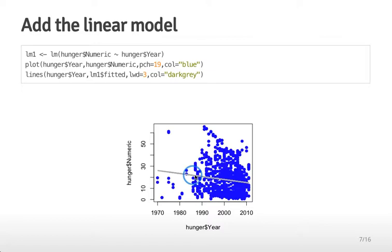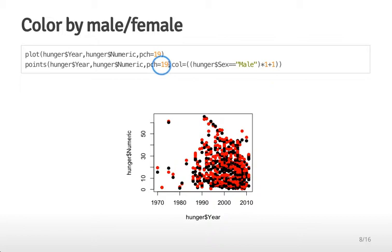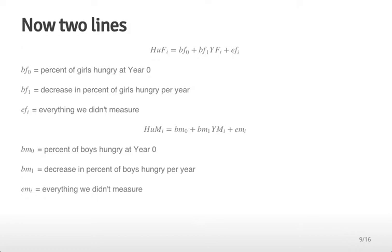We can overlay the best fit line from the linear model — it's in light gray and traverses from left to right. The next thing we can do is break the data down by other variables. The first one to consider is the male-female difference in hunger. In this plot, males are colored black and females are colored red, and from a first glance it doesn't seem like there's too much difference between those distributions.